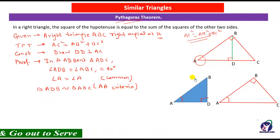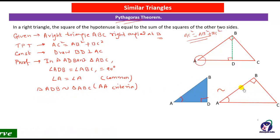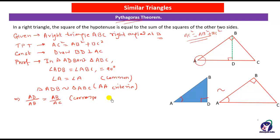Since these two triangles are similar, the ratio of their corresponding sides will also be equal. Therefore AD/AB = AB/AC. The reason is that corresponding sides of similar triangles are proportional.